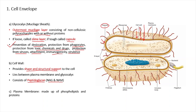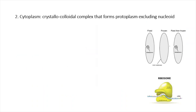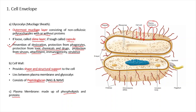The innermost layer is the plasma membrane, which is composed of phospholipids and proteins. Next is the cytoplasm, which is basically a crystallo-colloidal complex forming the protoplasm excluding the nucleoid. Everything just interior to the plasma membrane, excluding the genetic material, is the cytoplasm.